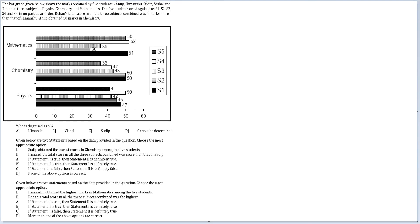Let's look at this question. The bar graph given below shows the marks obtained by 5 students — Anup, Himanshu, Sudip, Vishal and Rohan — in 3 subjects: Physics, Chemistry and Mathematics.